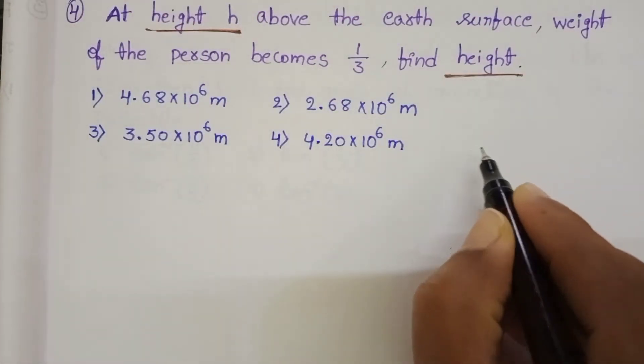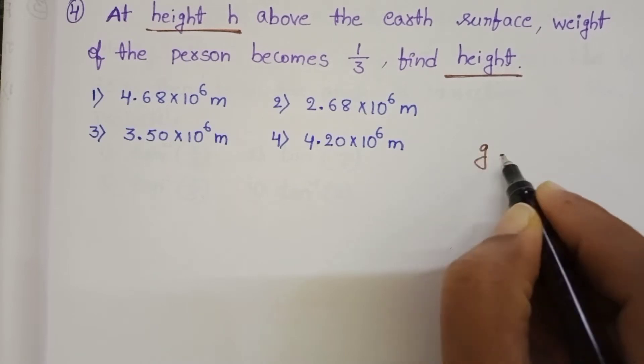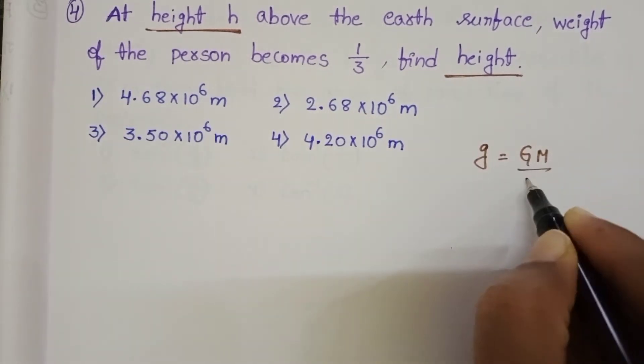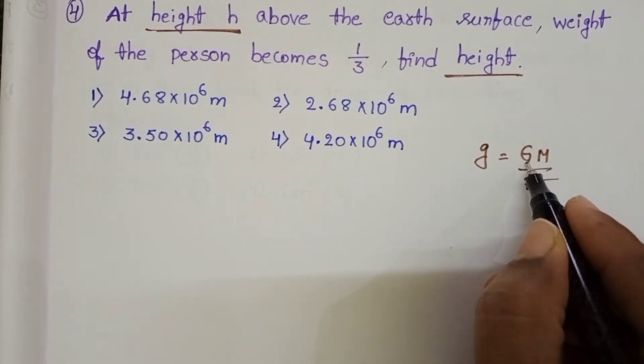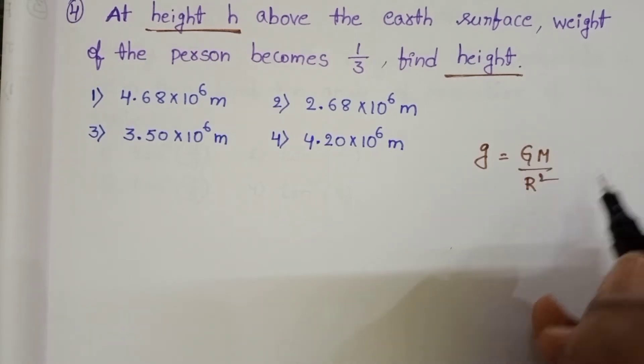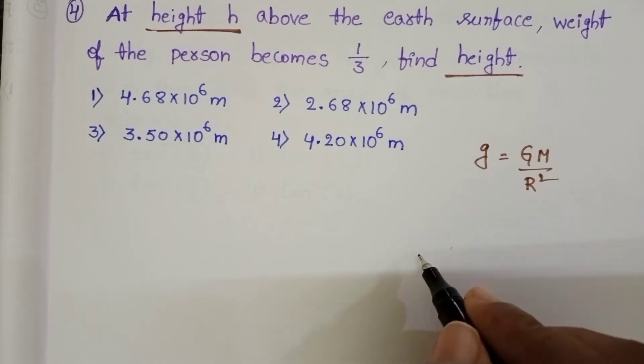Acceleration due to gravity, g equals GM by r square, where M is mass of the earth, G is universal gravitation constant, and r is the radius of the earth.